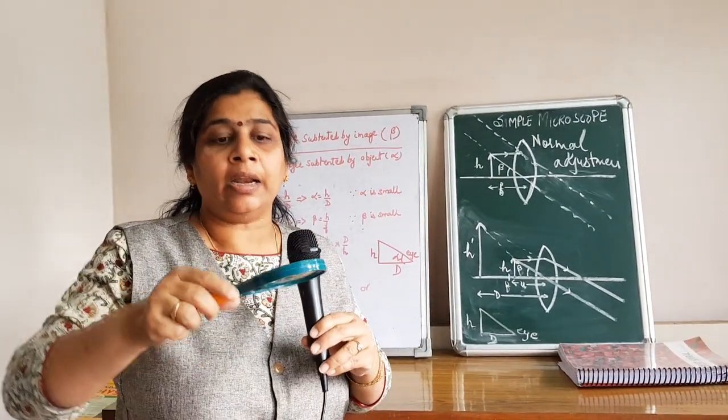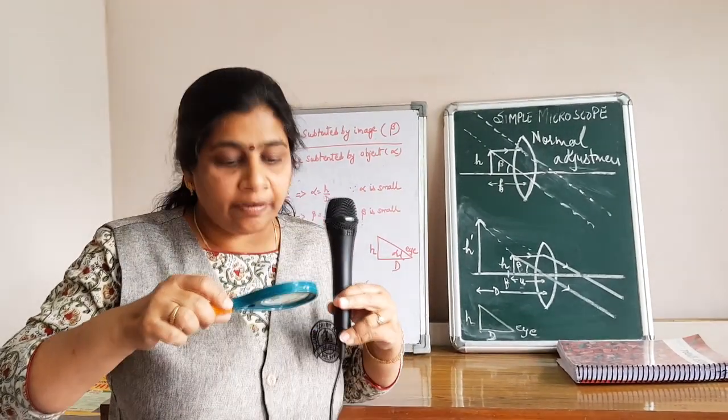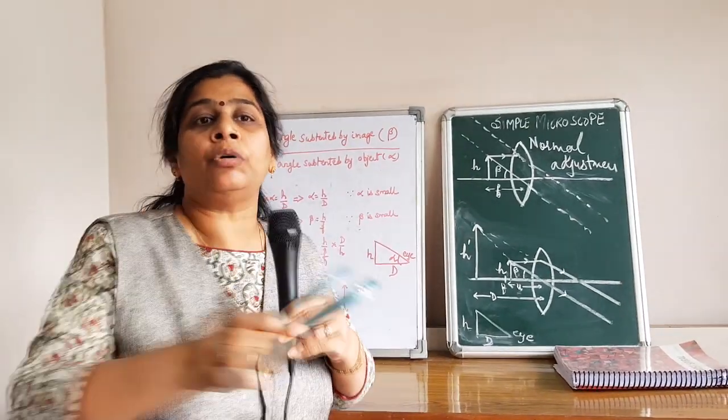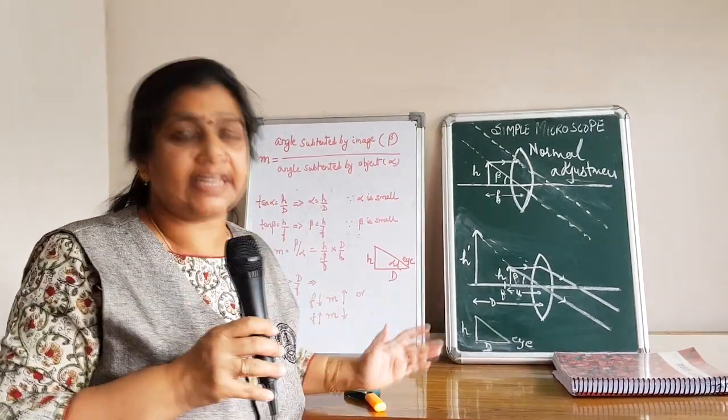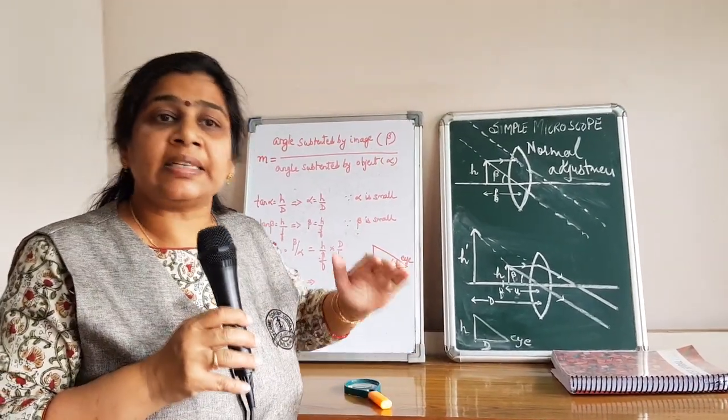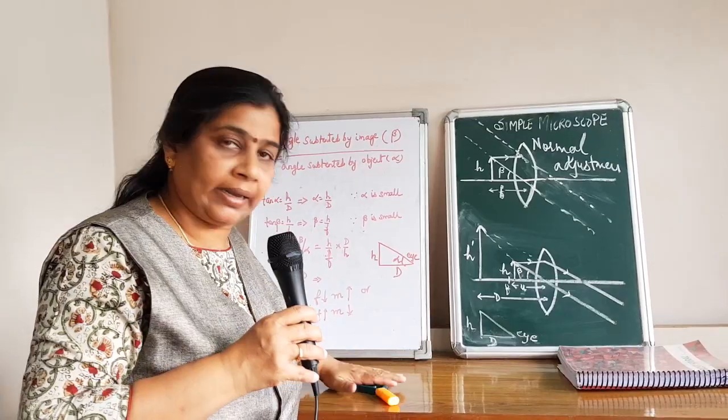When a very minute object is there, we focus through the lens and we are able to see the minute objects quite broadly and then we are able to see that. A simple microscope is nothing but a magnifying glass.